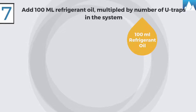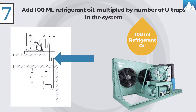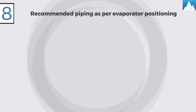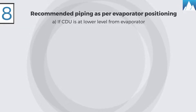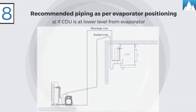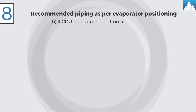Six, pressurize and leak test the entire refrigeration system including the condensing unit, evaporator, all connected tubing and fittings. Seven, add 100 ml of refrigerant oil in the system multiplied by the number of U-traps given in the interconnected piping. Eight, recommended piping as per evaporator positioning: A, if the condensing unit is at a lower level from the evaporator, give one U-trap on the suction line immediately coming out from the evaporator.